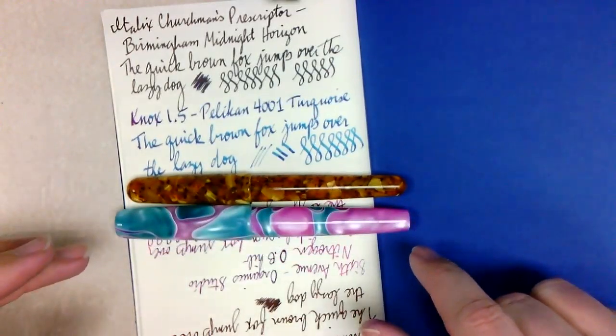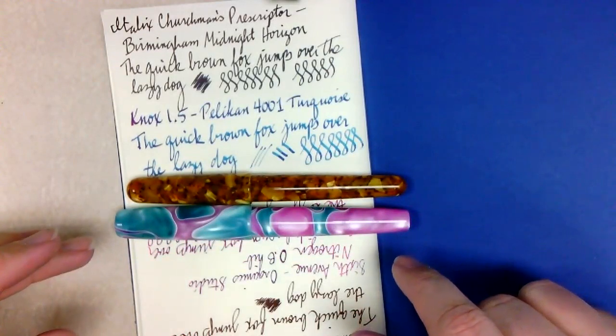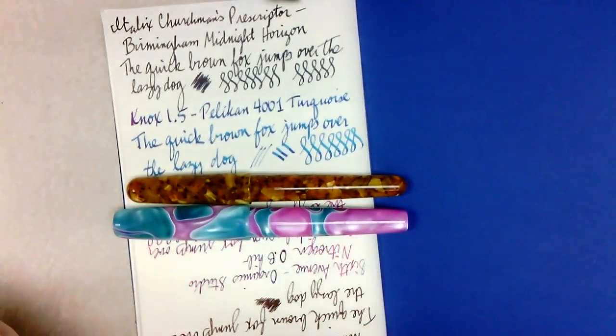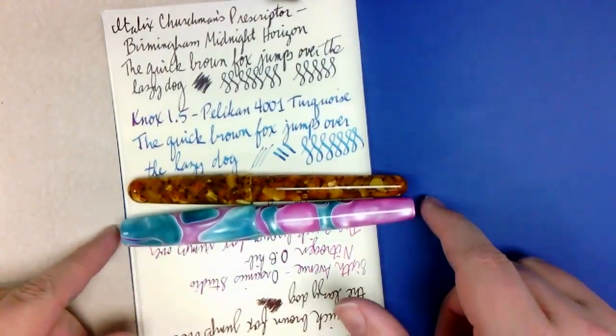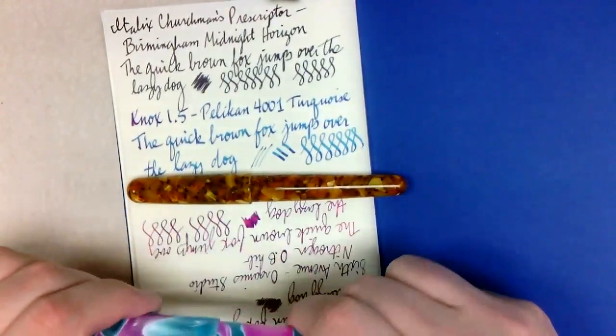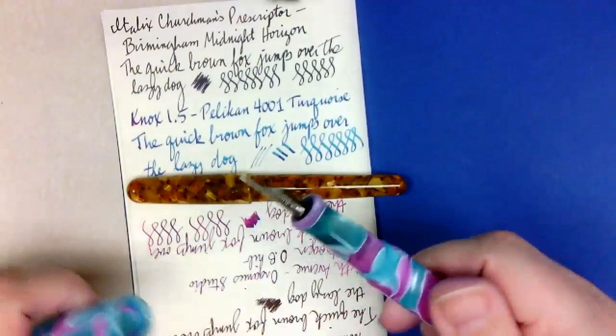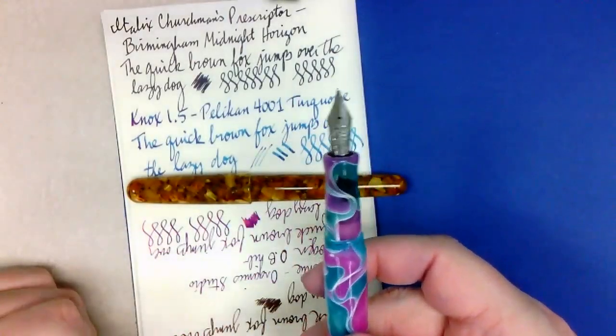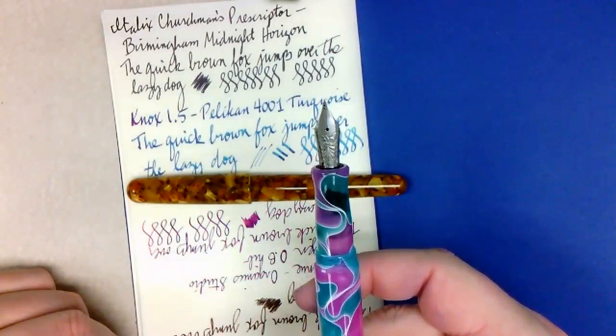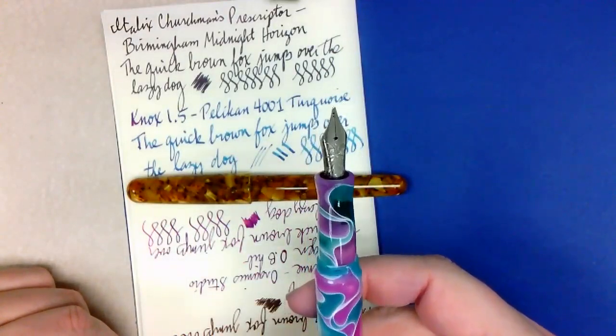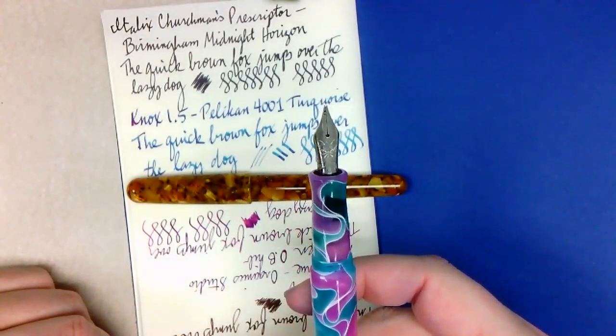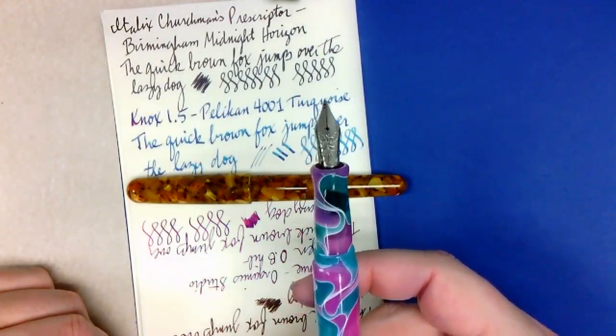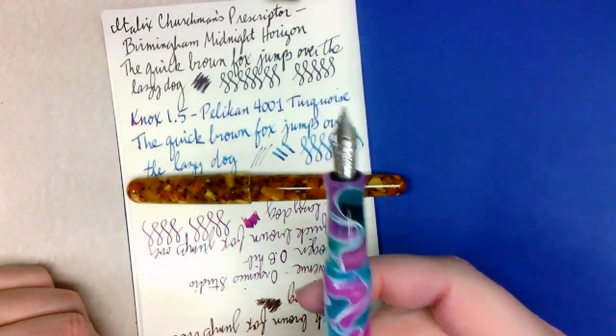Again, I find them very nice pens. They currently run $99, or it was basically a hand-turned acrylic pen with a lot of nib variations. Now, granted, he does have zillions of nibs running around. But you can get the Mimasign stubs. You can get the Mimasign fine, medium, broad. You can get the Knox 1.1, 1.5, whatever he still has in stock in those. You can still get those.